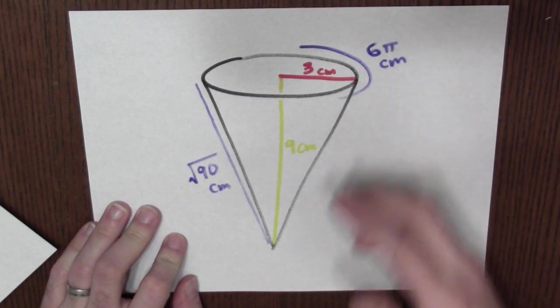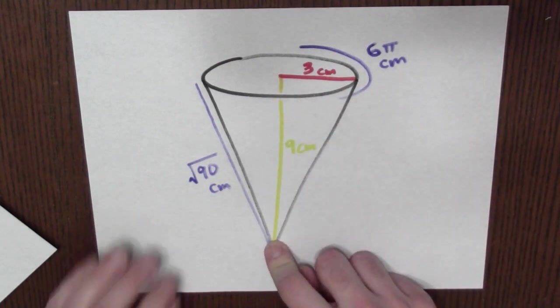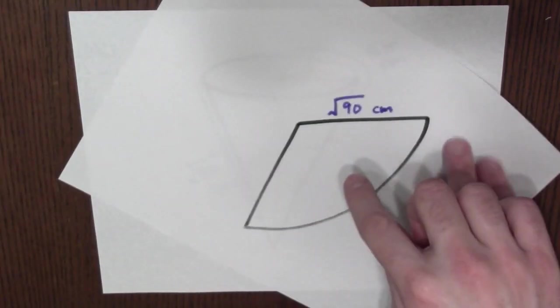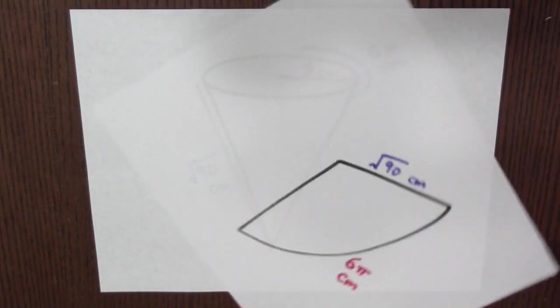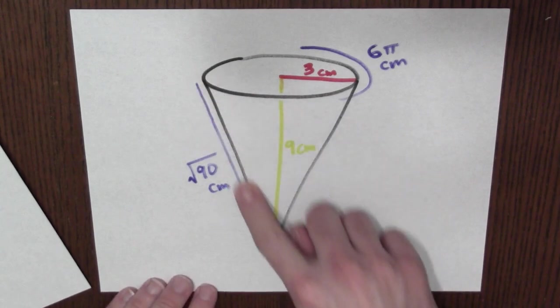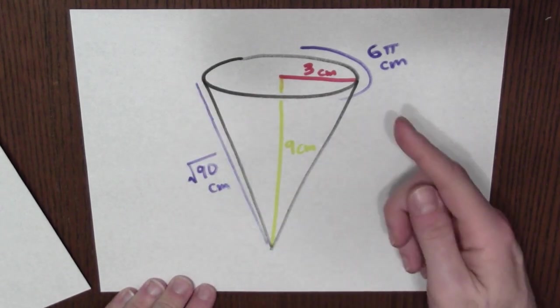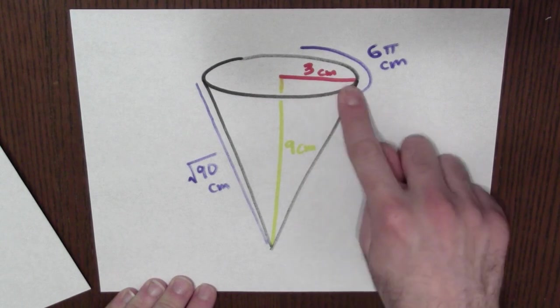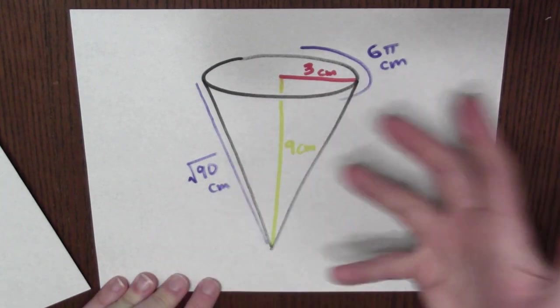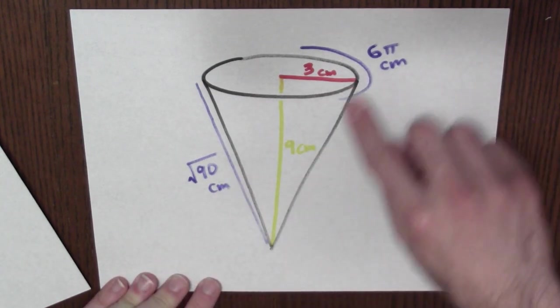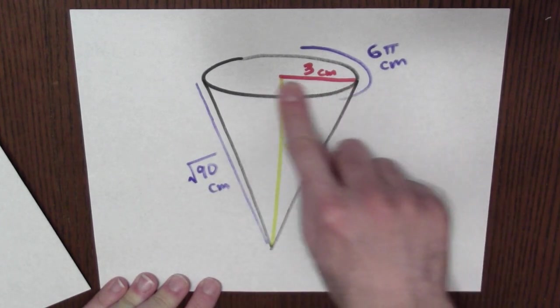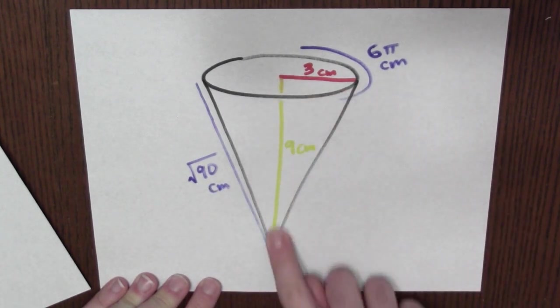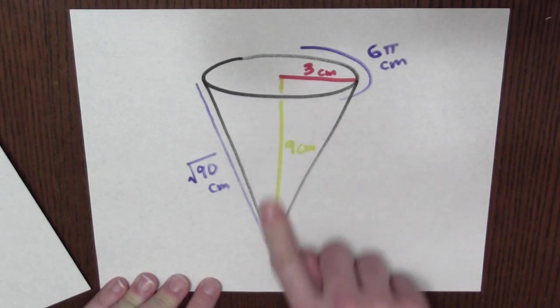Now that's enough information to figure out the height of the cone. I built the cone out of this piece of circle whose radius was square root of 90 centimeters, and that ends up becoming this length here, square root of 90. And I know this length is 3 and what I've really got here is a right triangle. The hypotenuse has length square root of 90. This leg has length 3. And that tells me that this leg, which is the height of the cone, is 9 centimeters.